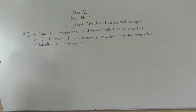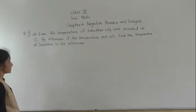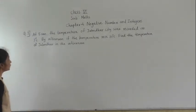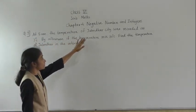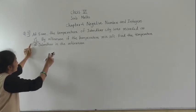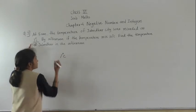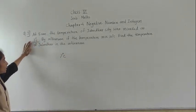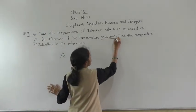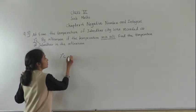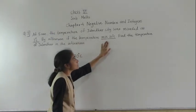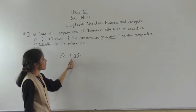Let's solve question number 7. At 5 AM, the temperature of Jalindal City was recorded as 7 degrees Celsius. By afternoon, the temperature rose 30 degrees Celsius. Since 'rose' means it increased, we use plus 30 degrees Celsius.